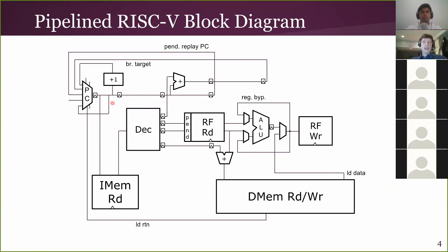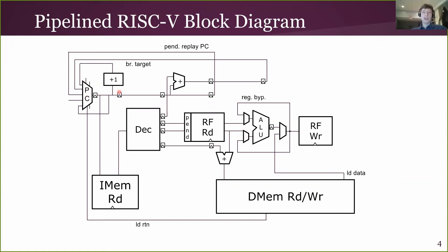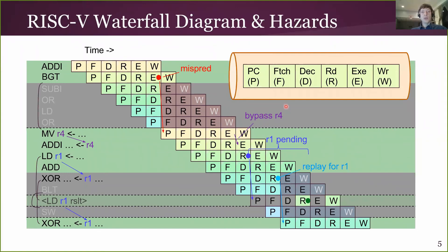Here I've added stages by adding flip-flops, which sequence the logic. Now we've got a separate pipeline stage for calculating the next PC, instruction fetch, then decode, register read, execute, and register write. We can view the operation of the machine over time in what's called a waterfall diagram. Many of you have had courses covering basic CPU architecture — just making sure everybody is on board, giving a quick overview of how instructions and various categories of instructions play out as they issue and execute through the pipeline.